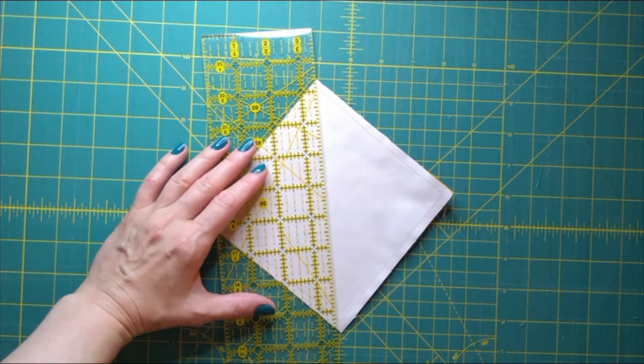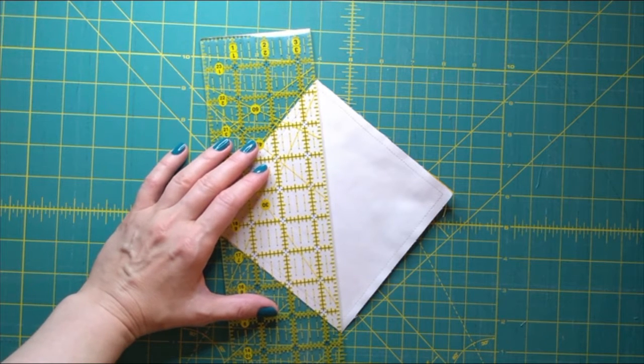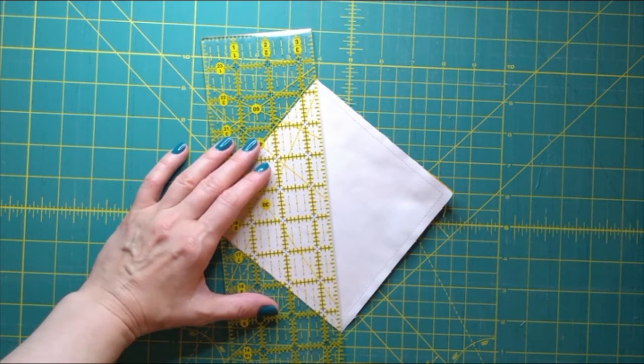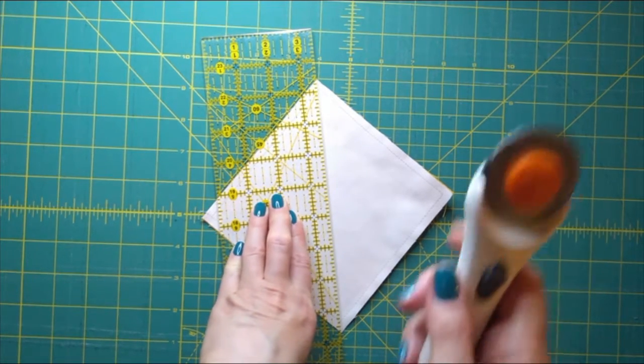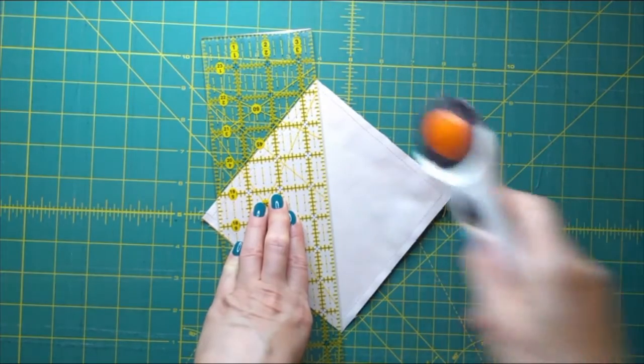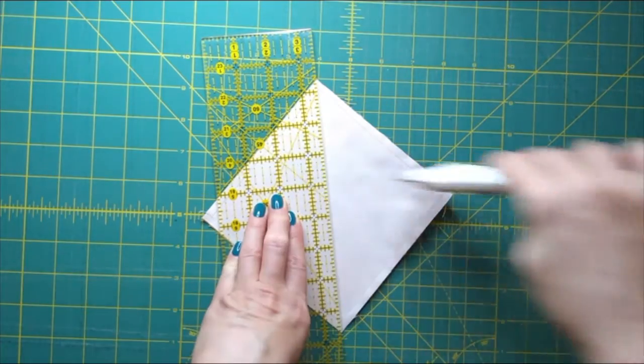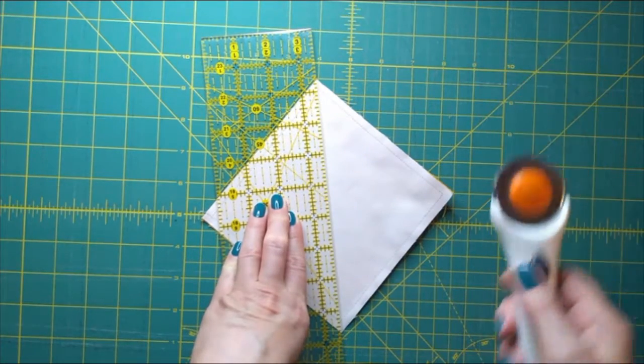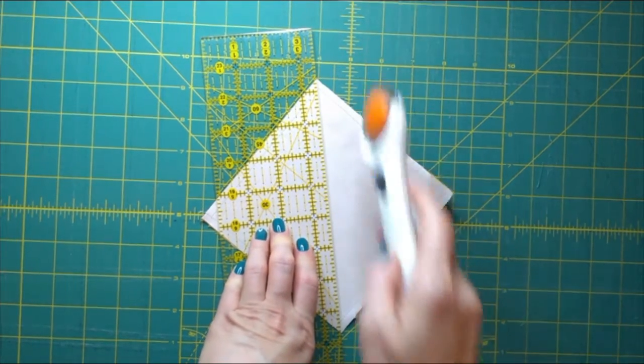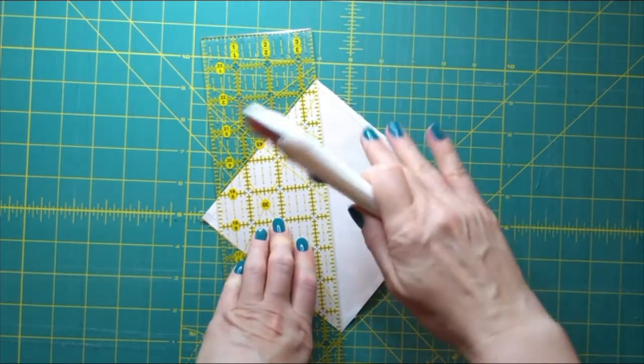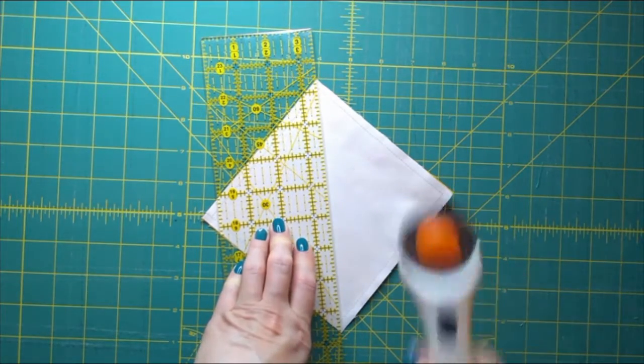I will line up my ruler from point to point and you want to make sure you're in a position where you can move your ruler the opposite way because we're going to cut one way and then the other way. My blade is in so I'm not going to cut my fingers. You want to position your piece so that you can cut one way and the other without shifting and moving your piece.